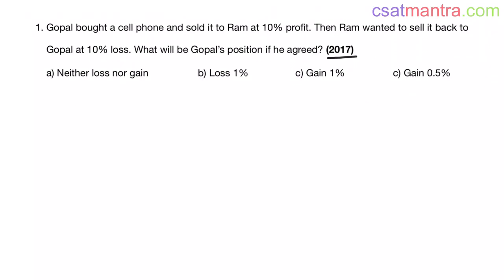Gopal bought a cell phone and sold it to Ram at 10% profit. Then Ram wanted to sell it back to Gopal at 10% loss. What will be Gopal's position if he agreed? Say Gopal bought the cell phone at 100 rupees.